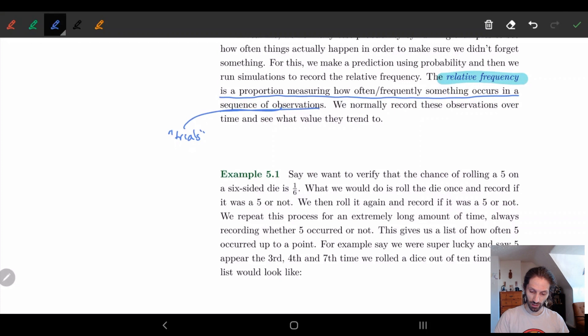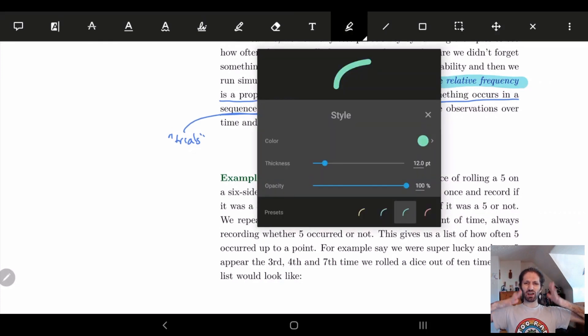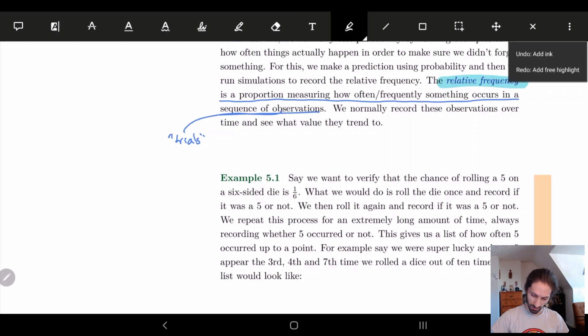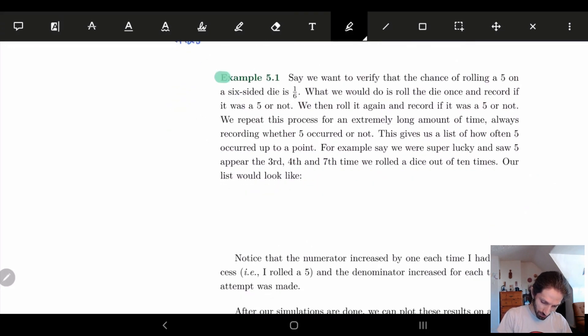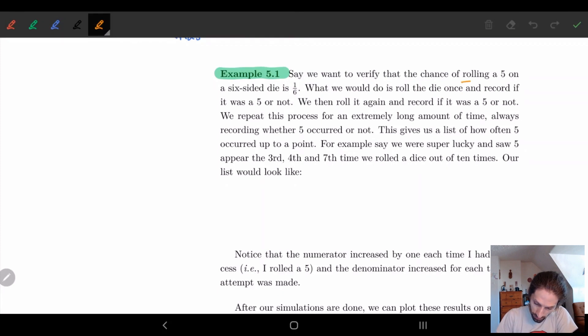So let's look at an example of kind of what I'm talking about and that I think should bring things down and make things make a little more sense. So let's look at an example and we'll look at an example that we were pretty sure we know kind of how things would work. So we're going to look at the chances of rolling a five on a six sided dice. Now here we know that the probability is one sixth. So we expect over time, this should trend towards one sixth. And so what we're going to do is in order to figure out the relative frequency, we're going to take a die and we're going to roll it. And every time we roll a five, we keep track that we rolled a five. And every time we didn't, we keep track that we didn't. So we're always keeping track whether we roll a five or not.